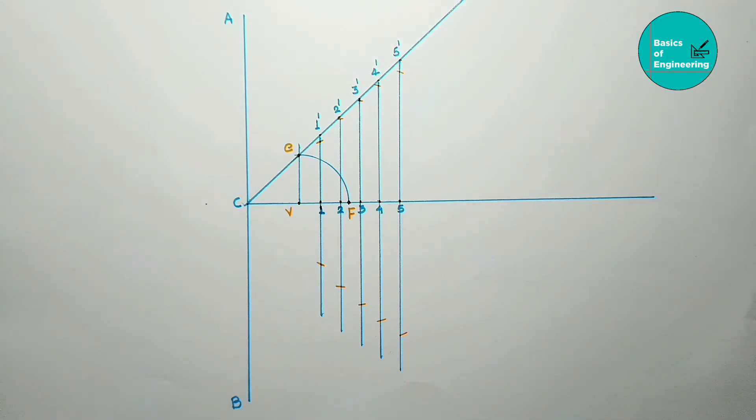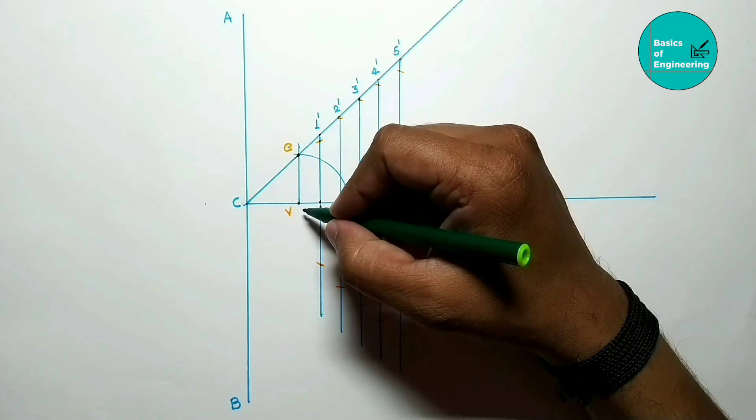Our parabola is passing through these points. Now join all these points in sequence.